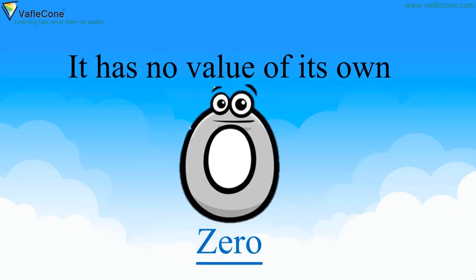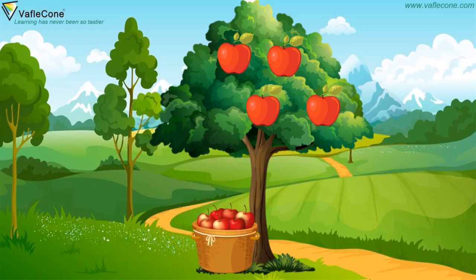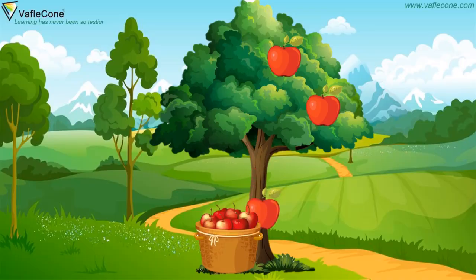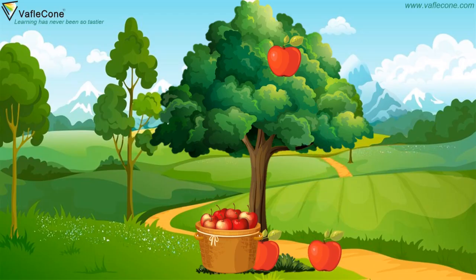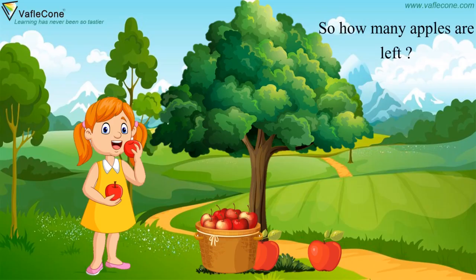Now friends, let's see one more example. There are so many apples on this tree. Four apples have fallen down. That one apple is with that girl. So, how many apples are left on this tree? Zero.